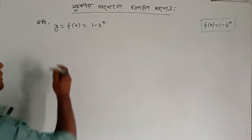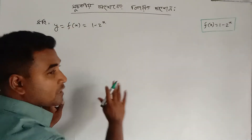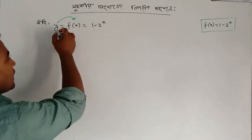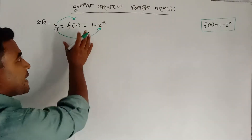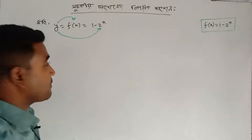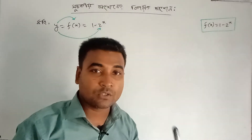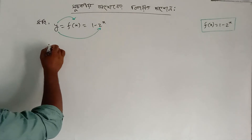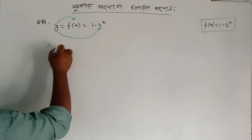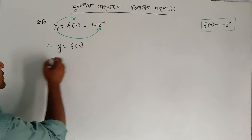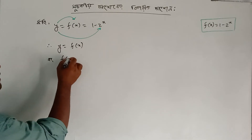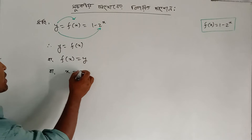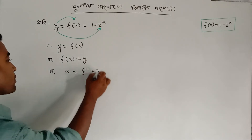If we go to the inverse function, we will see that the inverse function is equal to 1 minus 2 to the power x. We will see a half-element function. The calculation is equal to 1 minus 1, which is equal to 0.